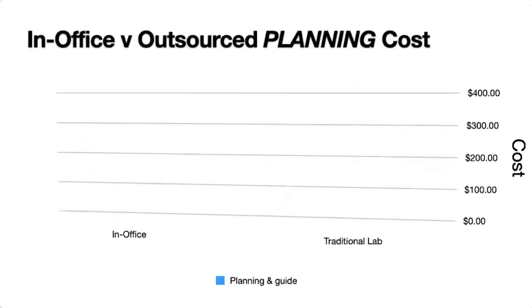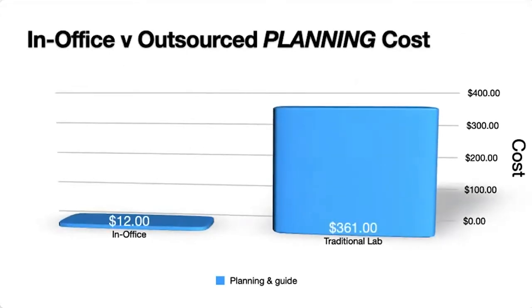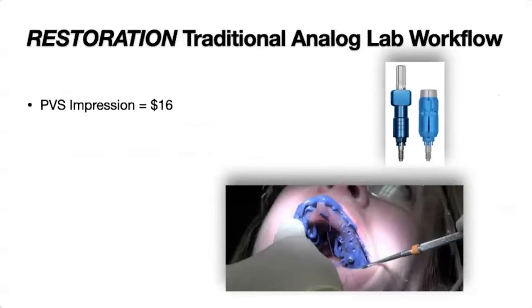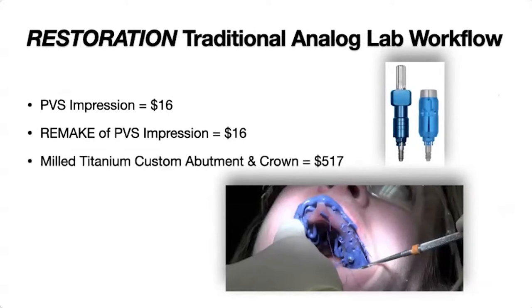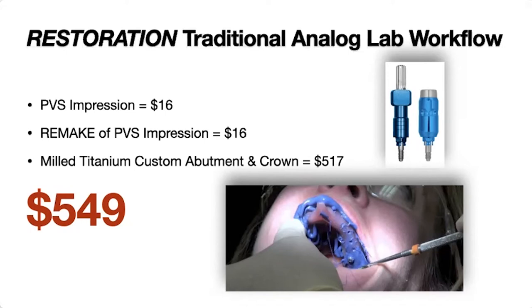In-office versus outsourced planning cost: $12 versus $361. The milled custom abutment and crown costs me $517, a savings of about $300 per case. If you restore just one or two implants per month, that savings alone helps pay for the mill. So there's really not an excuse anymore not to have a mill — you don't have to worry about how many crowns you mill every month.